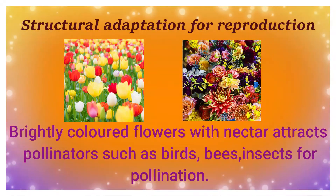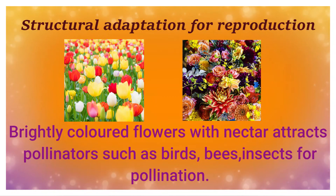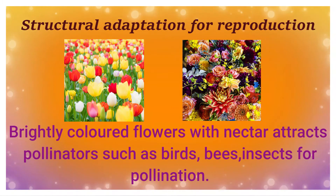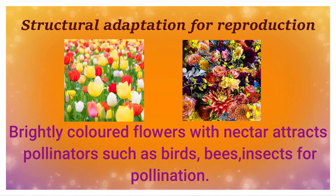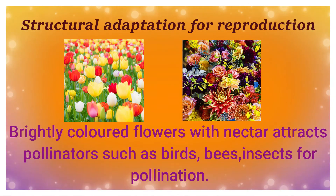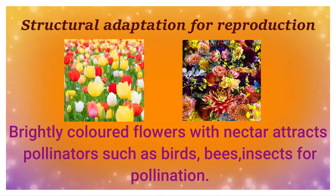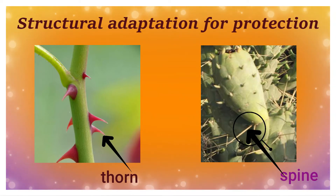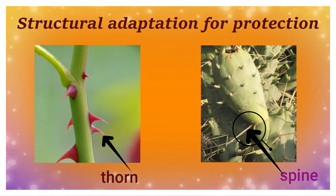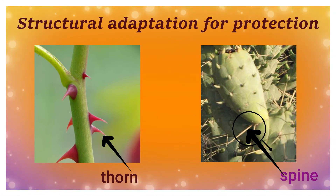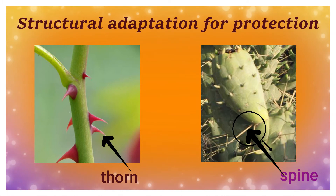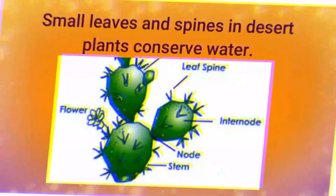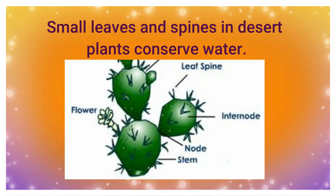Structural adaptation for reproduction. Thorns and spines are structural adaptations which protect plants from predators — due to the presence of thorns and spines, the plant is not eaten by animals. Small leaves and spines in desert plants also conserve water.